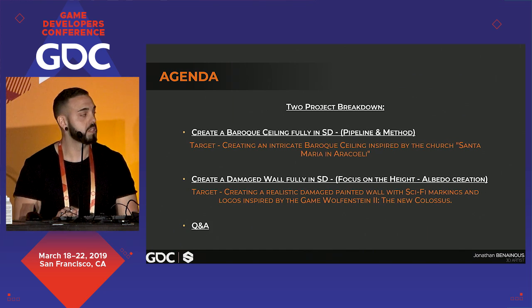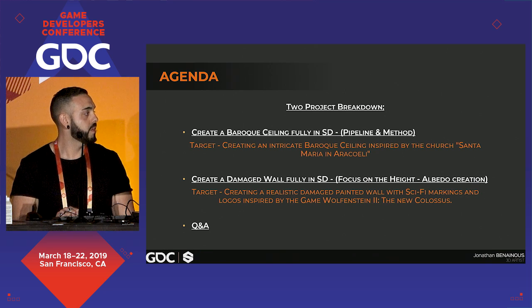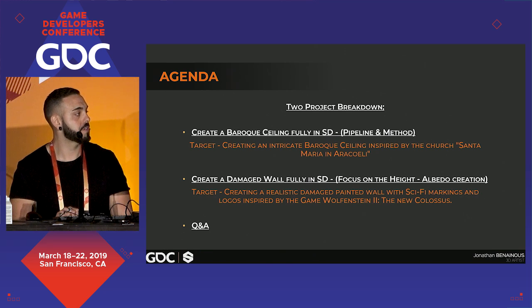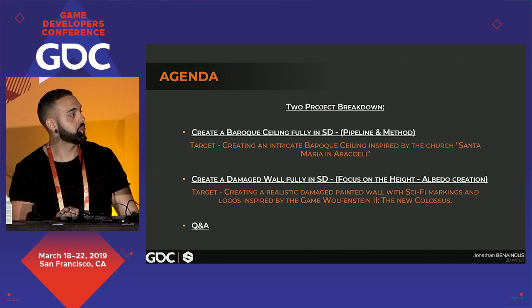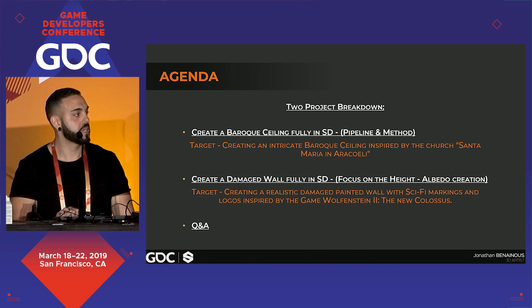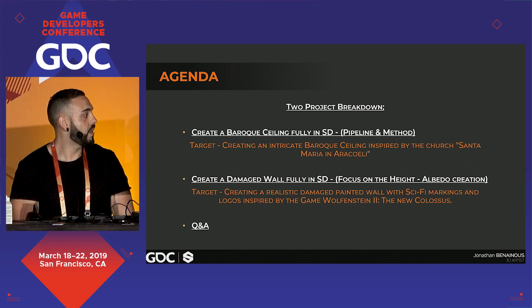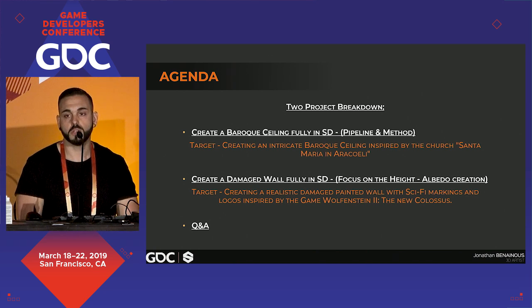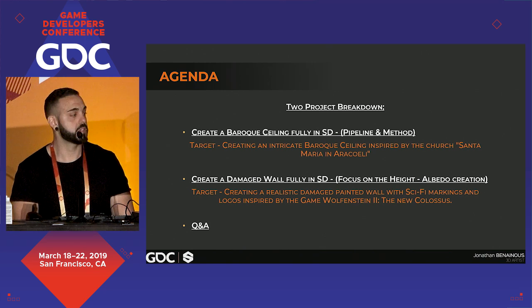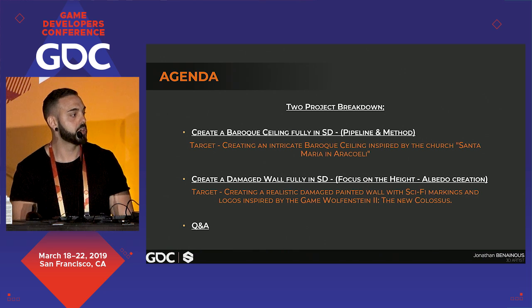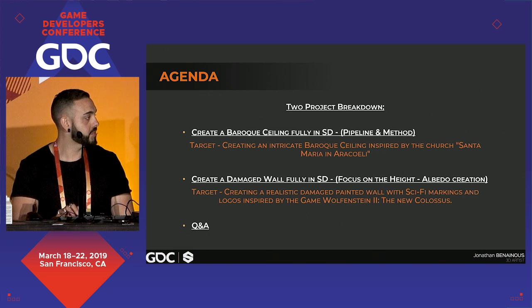Today we're going to take a look at two project breakdowns. The first part will be about creating a baroque ceiling fully in Substance Designer, focused on the pipeline and method. The target is to create an intricate baroque ceiling inspired by the church Santa Maria in Araquelli. In the second part, we'll look at creating a damaged wall fully in Substance Designer, focused on height and albedo creation with tips and tricks, inspired by Wolfenstein II: The New Colossus. We'll also have some Q&A at the end.